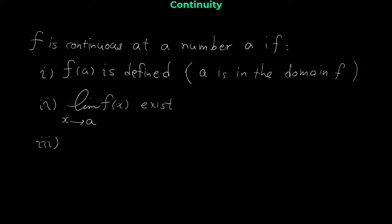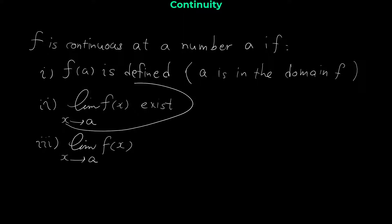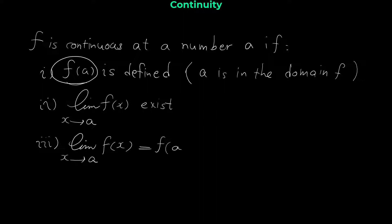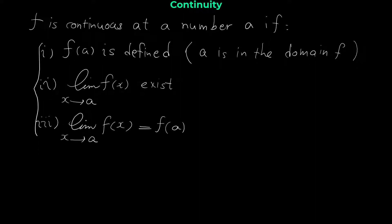The third condition for continuity is that the limit of the function, which exists from the second part, should be equal to f of a — the value of the function at that point. If all three conditions are satisfied for a function, then that function is continuous at that point.